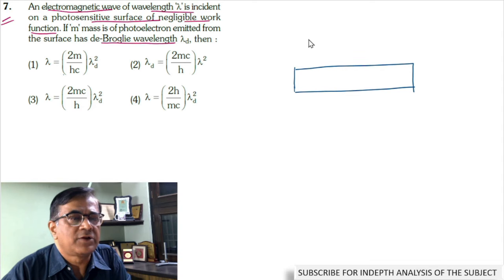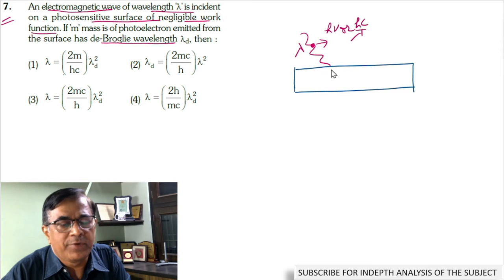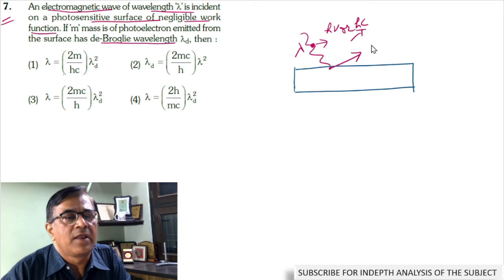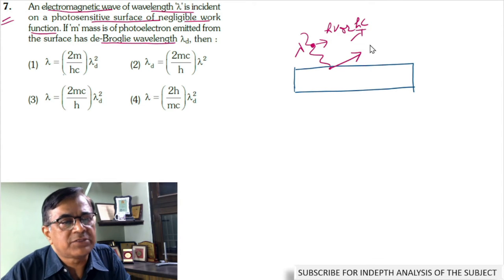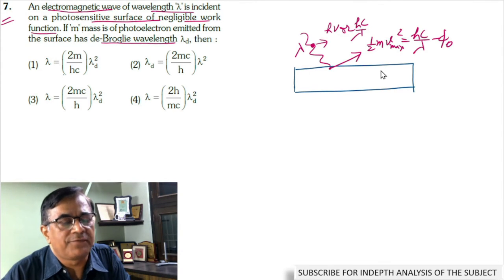Electromagnetic waves can be thought of as made up of large number of photons. The energy of one such photon is given by H nu or Hc by lambda. If this photon is absorbed by one of the electrons, then this electron comes out of the surface. The maximum kinetic energy of emitted photoelectron is given by half m Vmax square equals Hc by lambda minus phi naught, where phi naught is the work function.